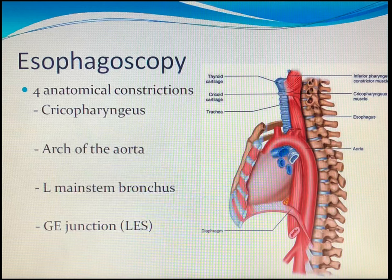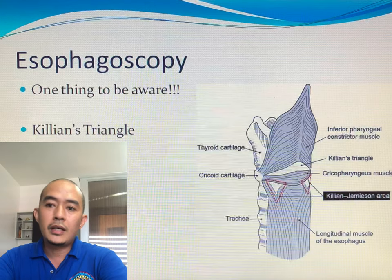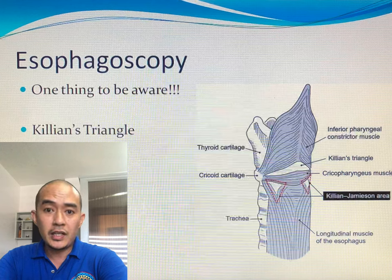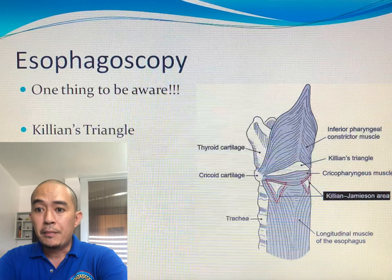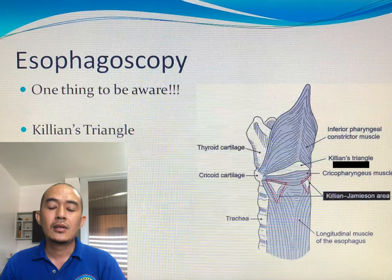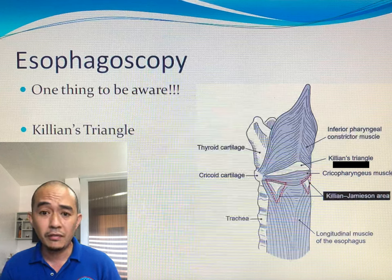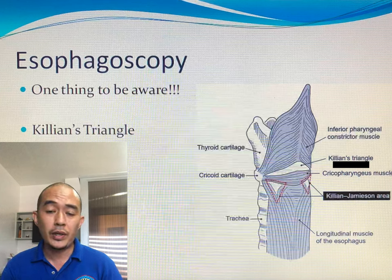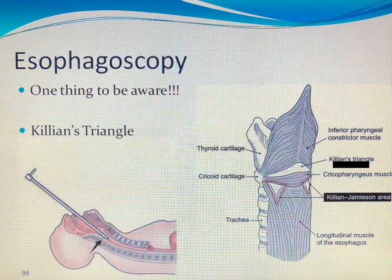The reason we do not forcefully insert the esophagoscope through the cricopharyngeus area is because of Killian's triangle — a weakened part of the posterior esophageal area. If we forcefully insert the scope through the cricopharyngeus, we might perforate that area. Killian's triangle is the most posterior part of the area, and this is an important point to remember.